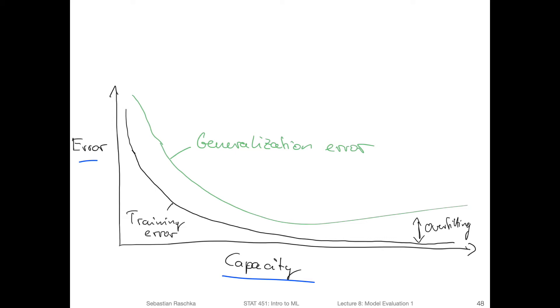So here, what we have is the training error. And the larger the capacity of the model, the lower the training error, because the more complex the model is, the better it will be able to fit the training data. For example, think of short decision trees and very deep decision trees. Deep decision trees will be able to fit the data better, so the training error will go down.